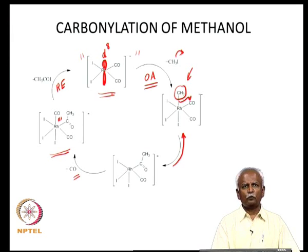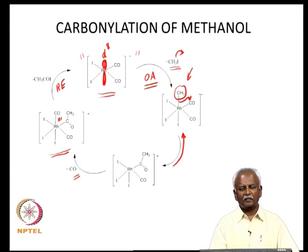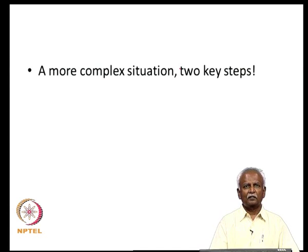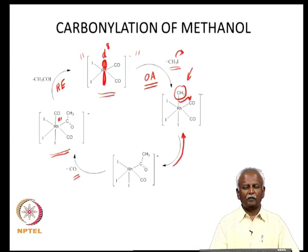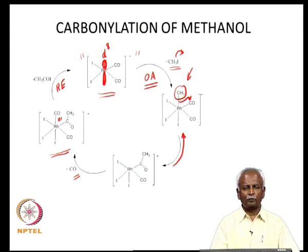The resting state of the catalyst is regenerated, and acetyl iodide is eliminated in the reductive elimination step. Acetyl iodide is then converted to hydroiodic acid and acetic acid, and the hydroiodic acid converts methanol to methyl iodide. Essentially, methanol has been converted to acetic acid. This catalytic cycle is the simplest of the carbonylation reactions — only one oxidative addition, one insertion, and one reductive elimination.